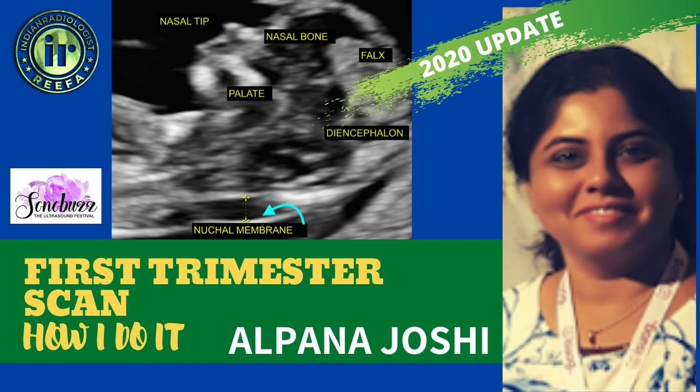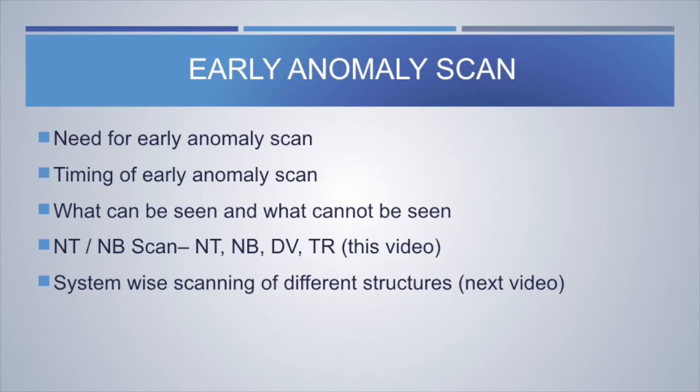Today we will see the 11 to 14 week scan. The talk is divided into the following points: the need for the early anomaly scan, the timing of early anomaly scan, which structures can be seen and which cannot be seen. In this first video we will see NT, NB, DV and TR, and in the next video we will see the systematic scanning of different structures as part of the early anomaly scan.